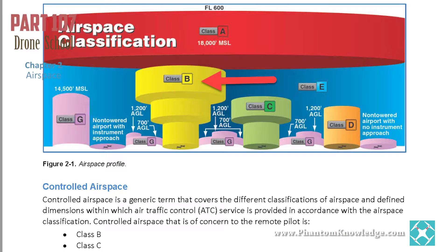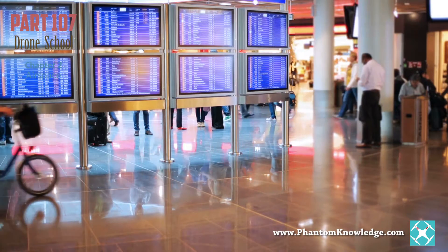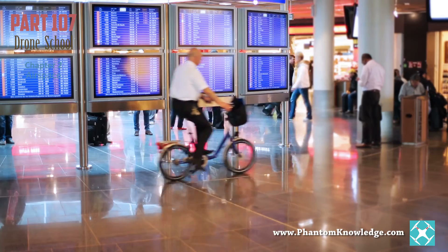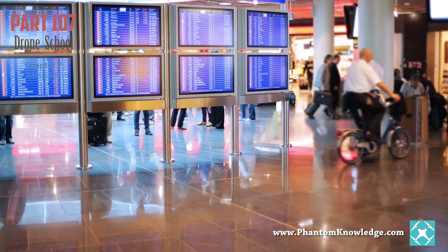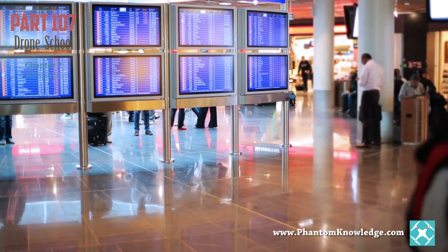Class B airspace is next, and that's going to surround the busiest airports in the world. Think LAX, O'Hare, and JFK as examples. Generally, Class B extends from the surface to 10,000 feet MSL, but it can be tailored to specific airports, so you've got to pay attention as to where you're at.